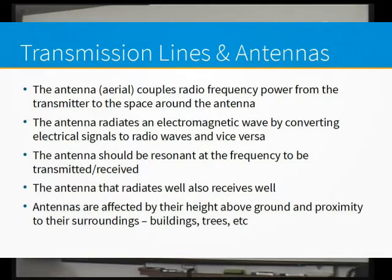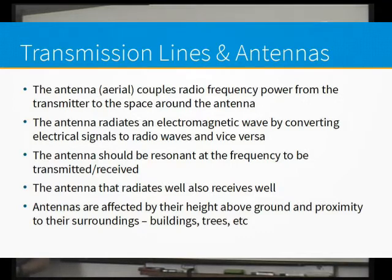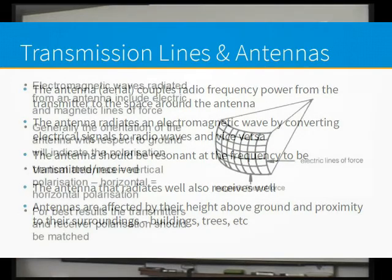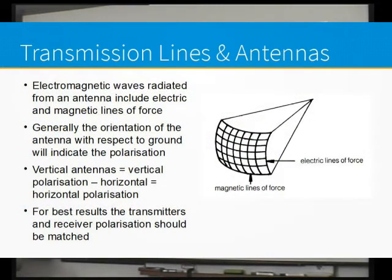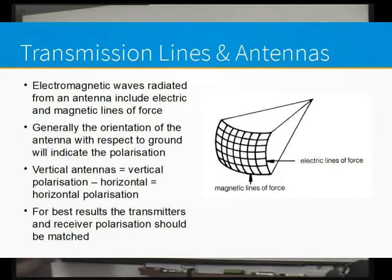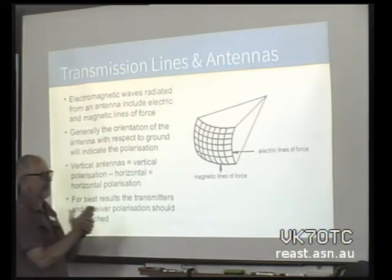Antennas are affected by absolutely everything around them. You can put up an antenna in one place and it works perfectly, and put it up in another place and it doesn't work quite so well. It's affected by height above ground, proximity to trees, proximity to buildings, and its surroundings. Electromagnetic waves coming out from your antenna are electromagnetic, meaning there are two components: an electric component and a magnetic component.